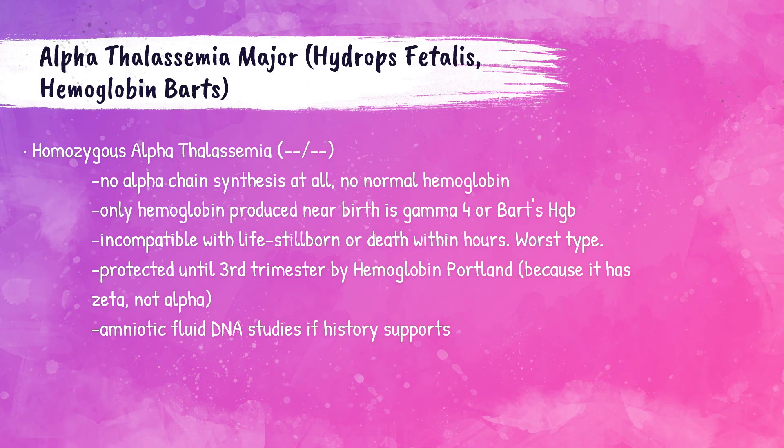Alpha thalassemia major, also called hydrops fetalis, is when there are no alpha chain genes present — genotypically --/--. All four alpha chains are deleted. Most of the hemoglobin in a newborn with this condition will be hemoglobin Barts. These newborns are unfortunately incompatible with life and will be stillborn or will die within hours upon delivery. They are kept alive in utero until the third trimester due to fetal hemoglobin Portland, which does not have any alpha chains.